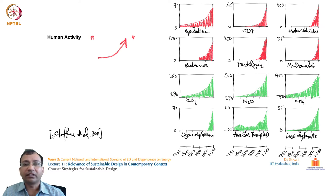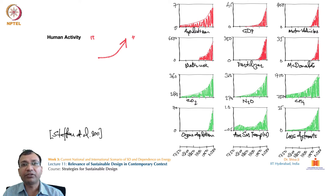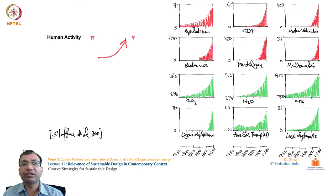If we look at the impact of human activity on any of these graphs shown on this slide, it is really astonishing to see that all of these graphs show exponential growth over time. For example, the first chart shows the progression of population — how it is increasing over time in millions.